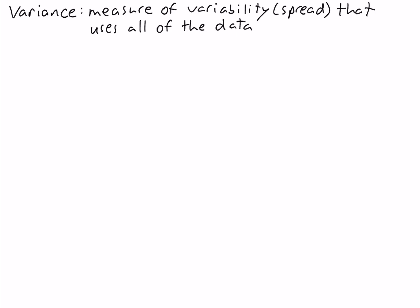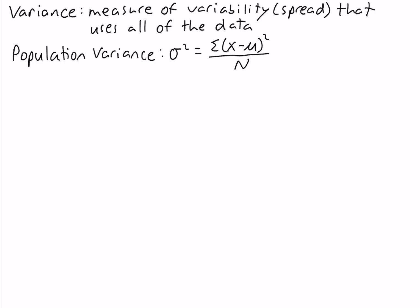We have two different variances depending on whether we're working with a population of data or a sample of data. If we're working with a population, we want to use the population variance. The population variance is written sigma squared, and it's equal to the sum of x minus mu, the population mean, squared, divided by capital N, the size of the population.